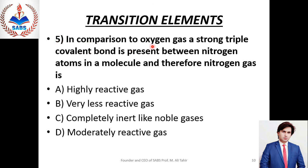Next question No. 5: In comparison to oxygen gas, a strong triple covalent bond is present between nitrogen atoms in a molecule, and therefore nitrogen gas is completely inert like noble gases. Right option must be Charlie. Nitrogen کے molecule میں triple bond ہوتا ہے اور اسے توڑنے کے لیے بہت زیادہ energy چاہیے ہوتی ہے۔ جب ہم سانس لیتے ہیں تو oxygen بھی جاتی ہے اور nitrogen بھی، لیکن nitrogen جیسے body میں جاتی ہے ویسے ہی باہر آ جاتی ہے جبکہ oxygen blood کے ساتھ react کرتی ہے۔ اس کی وجہ یہ ہے کہ nitrogen میں triple bond ہے جو بہت زیادہ strong ہے، اس لیے nitrogen gas noble gases کی طرح inert behave کرتی ہے۔